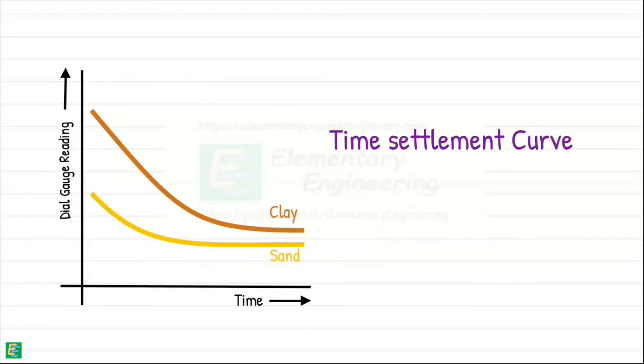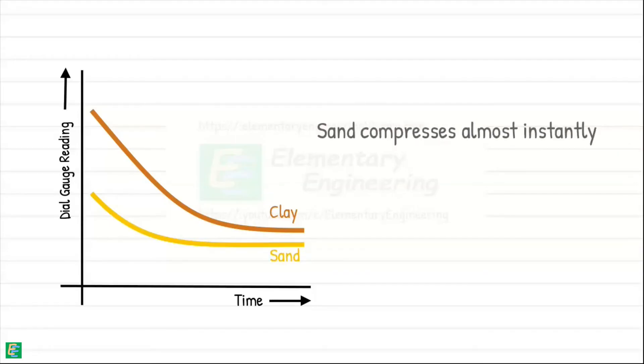If we draw this curve for sand, we note that sand experiences a very swift reduction in thickness that flattens within minutes. This demonstrates that most of the sand's compression occurs almost instantly. It is so because of the high permeability of the sand, which allows water to escape easily.